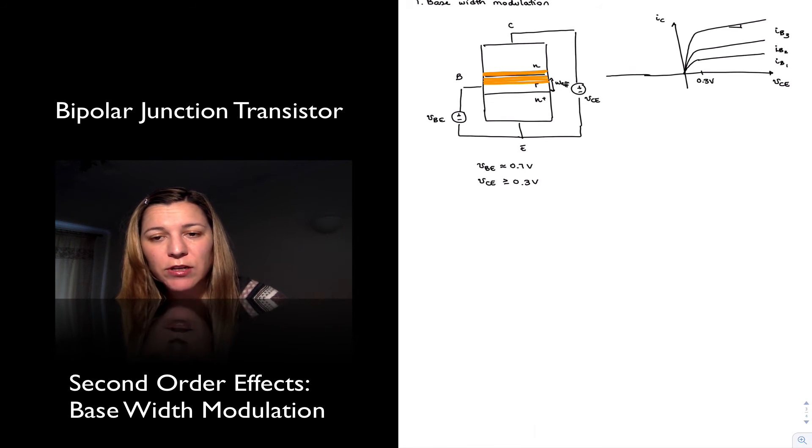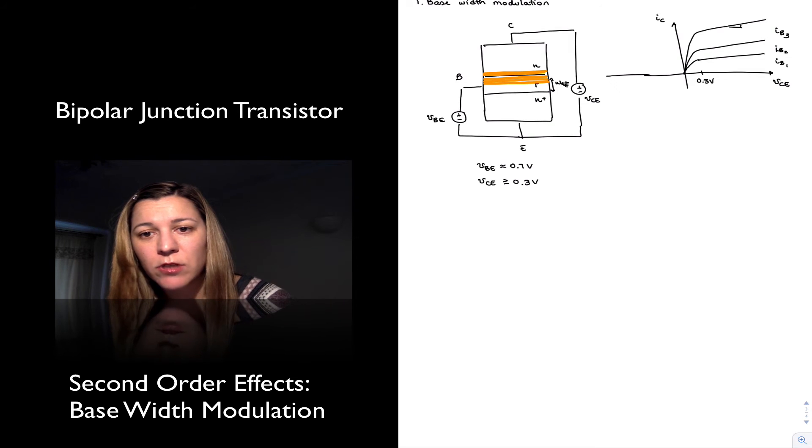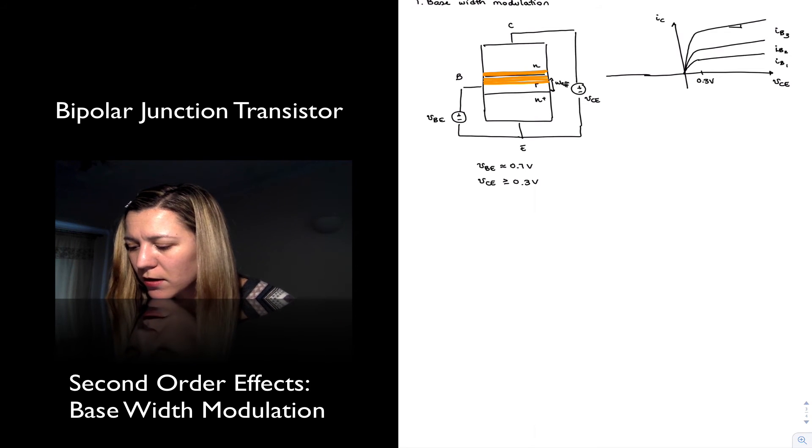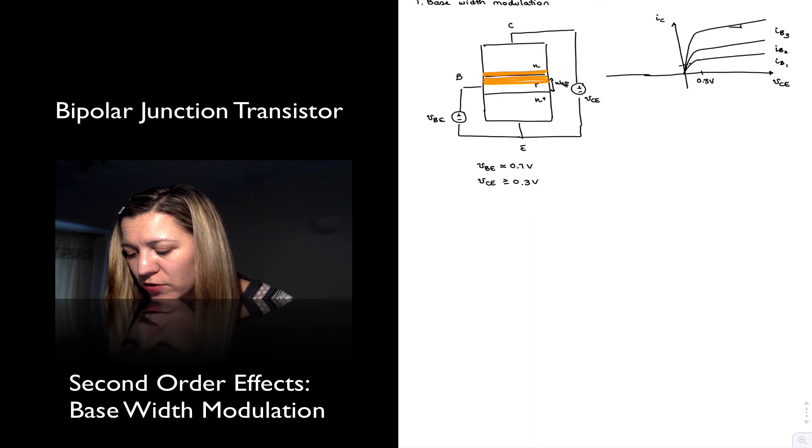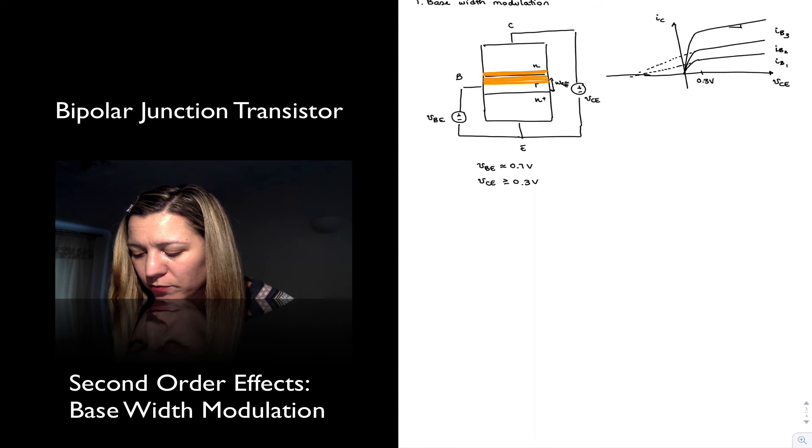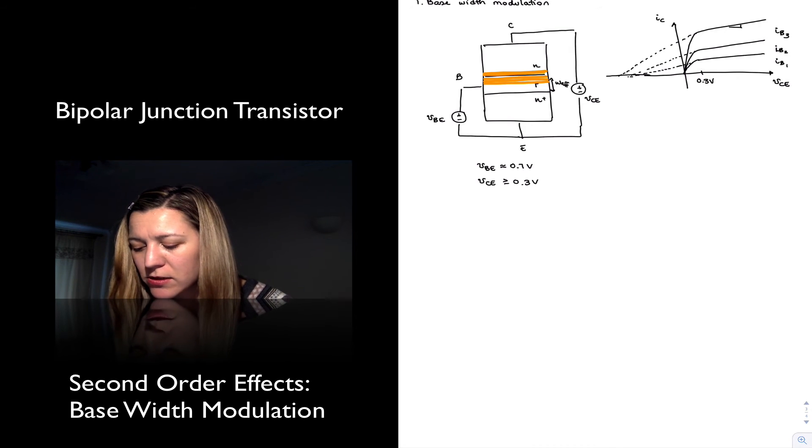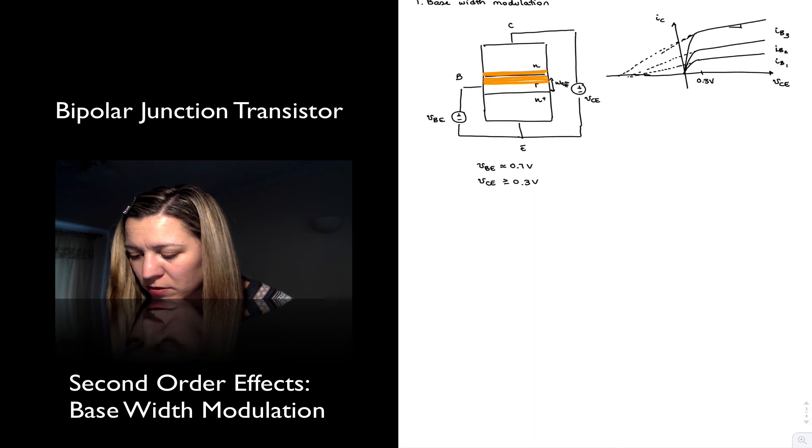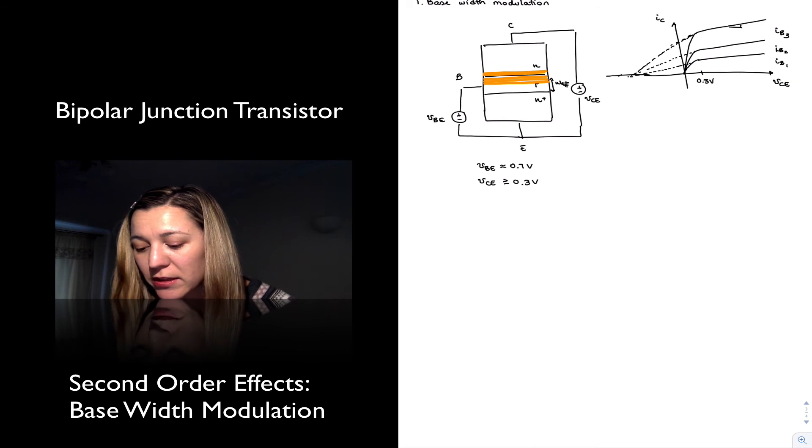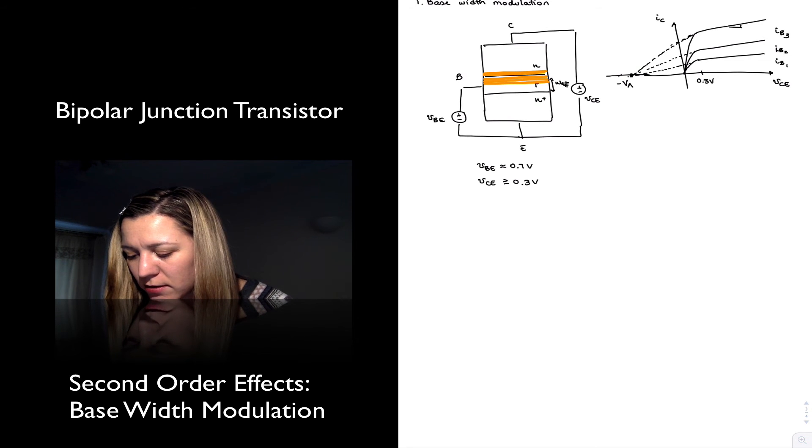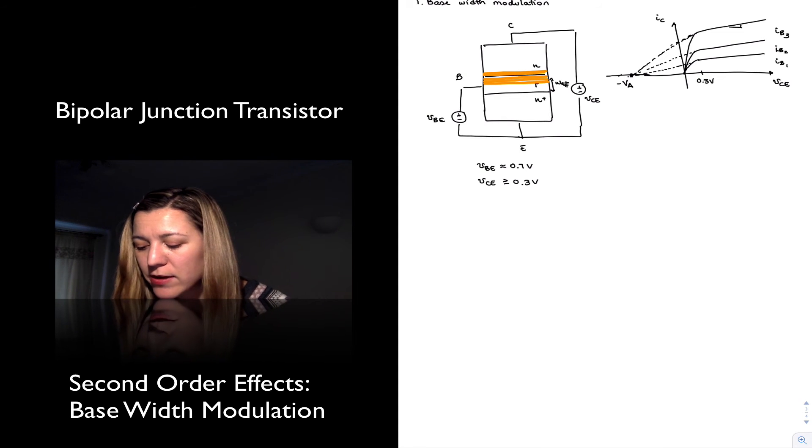This effect is called base-width modulation. It's also known as the early effect. And that's in honor of James Early, who was the American engineer who first observed this effect and published it in an article in 1954. And it is modeled via a parameter called the early voltage. And so the early voltage, the way we define it, is we'll know that if we do the projections of these lines, they will all meet at a point along the VCE axis. It's not very well represented, but you can use your imagination and think that if you did the straight projections, they will all meet at a point. And that's actually the value of that voltage is negative VA, VA being the early voltage.